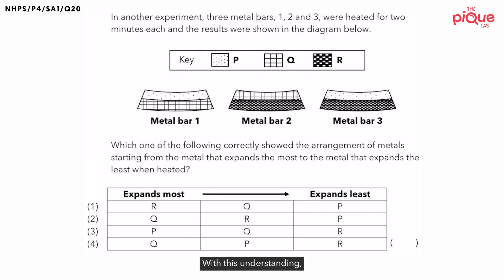With this understanding, the question is asking us to arrange metals, starting from the metal that expands the most to the metal that expands the least when heated. Let's label the metals in the diagrams here, using the key provided.